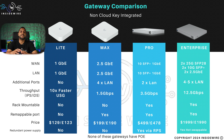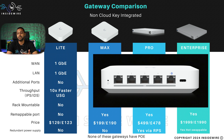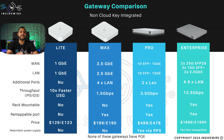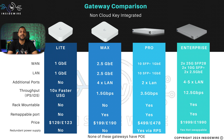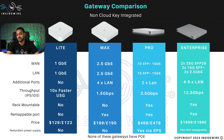The Gateway Max is a little bit quicker — something you would use in a slightly bigger environment, maybe a house or a small office. It has two and a half gig WAN and two and a half gig LAN. There are four additional ports on the back with no PoE, so if you're powering access points or cameras you'll need a PoE switch or injector. The throughput with IPS and IDS enabled is one and a half gigabits per second. It's not rack mountable but you can remap ports, giving you dual WAN capability. It comes in at $199 or £190.